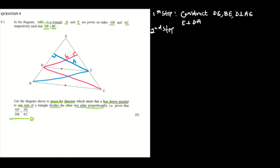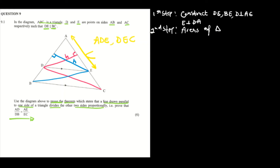The second step is to establish the areas of our triangles. Looking from this side, we're focusing on base AE. That base AE belongs to triangle ADE and triangle DEC — so we write triangle ADE divided by triangle DEC, where ADE has base AE and DEC has base EC.